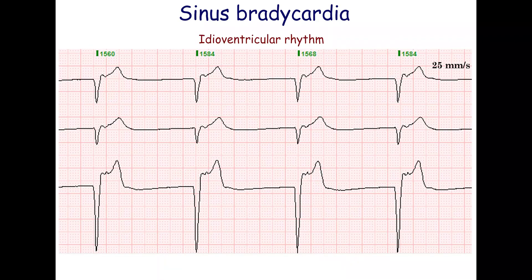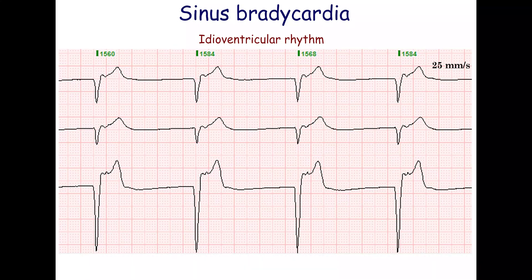A ventricular escape rhythm, also called an idioventricular rhythm, is characterized by wide QRS complexes that are not followed by P-waves. Retrograde P-waves are often superimposed on the ST segment.